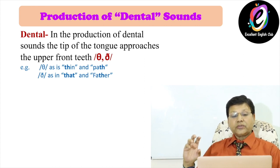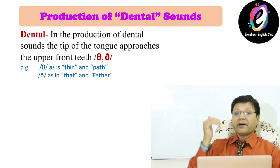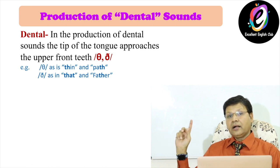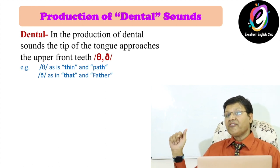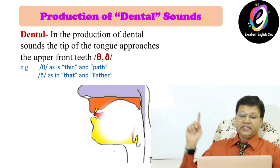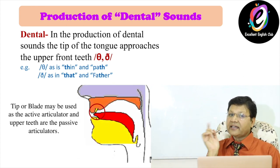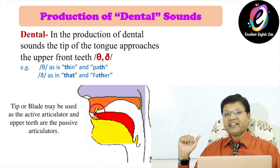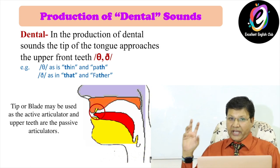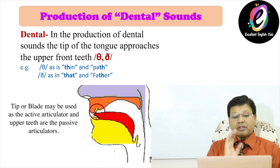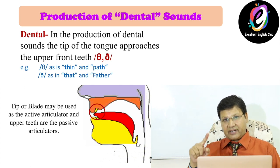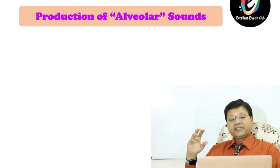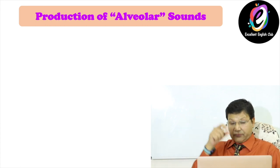Number three: production of dental sound. In dental sound we do not use our lips. The tip of the tongue approaches the upper front teeth — for example /th/ as in 'thin' and 'path', and /th/ as in 'that' and 'father'. In the picture you will see the tongue (in red) touches the upper front teeth (in yellow). The tip or blade of the tongue is the active articulator and the upper front teeth are the passive articulator.